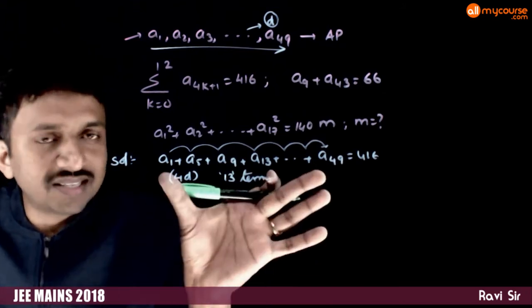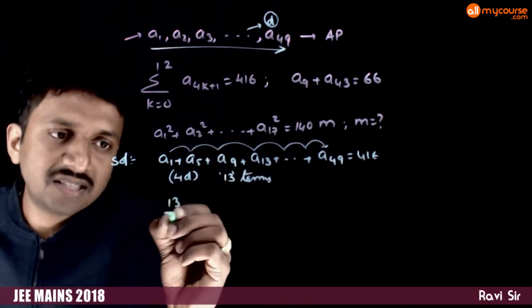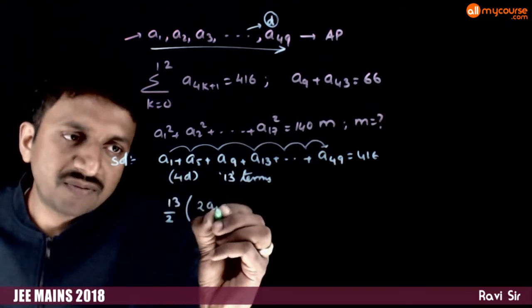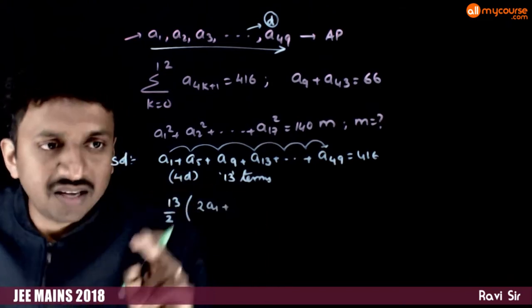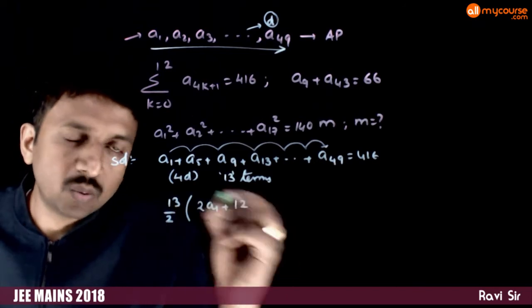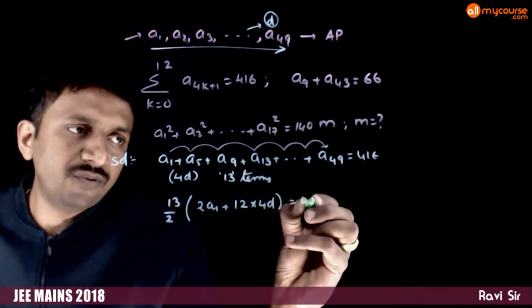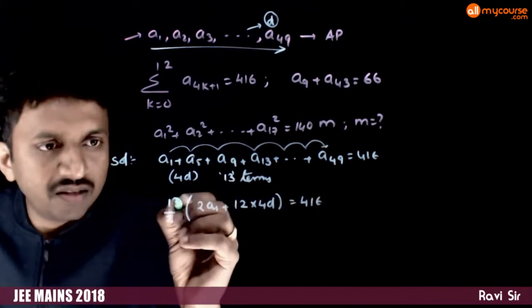What is the sum of this? Sum of this is 13 by 2 times, 2 times first term plus number of terms minus 1 times common difference is equal to 416. 13 gets cancelled by 2 and 2 gets cancelled here.